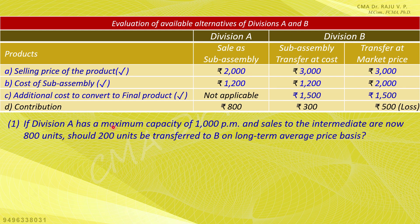Addressing Question 1: Division A has a maximum capacity of 1,000 units per month and sales to the intermediate market are now 800 units. The question is whether 200 units should be transferred to Division B on a long-term average price basis.